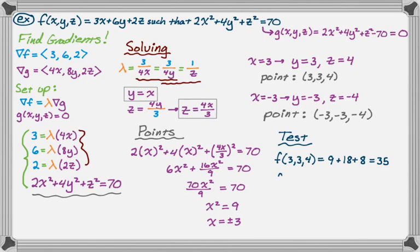And then f of negative 3, negative 3, negative 4 is actually just the negative of that because there's nothing really funny going on. So it's just negative 35. So the maximum value of the function given the constraint is 35, and the minimum is negative 35.